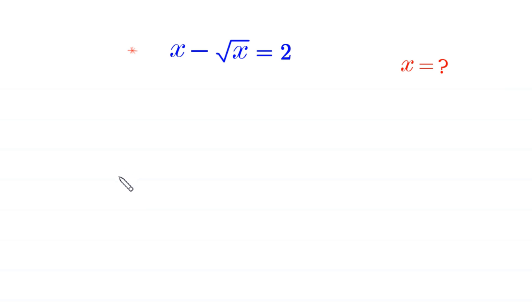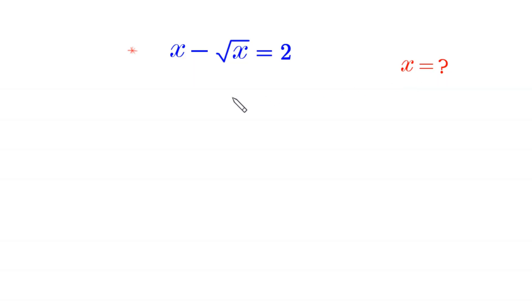Hello everyone, you are welcome to how to solve this very nice radical equation. x minus root x is equal to 2. Our job is to find all possible values of x. We will solve it by two methods.